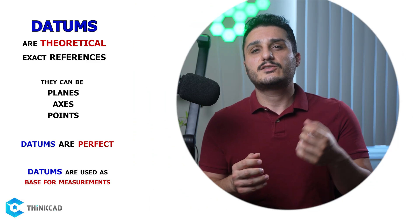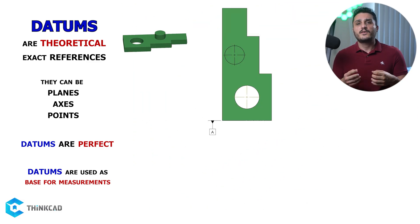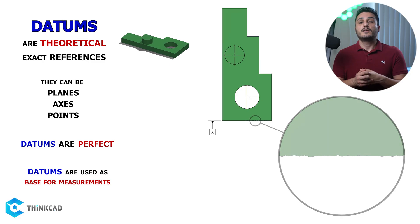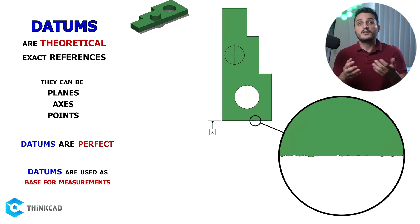Let's say you have a flat surface on your part which is defined as your datum. Now this flat surface is not perfect because this is the real world. Nothing is perfect no matter how accurate your manufacturing is. There is always an error even if small.